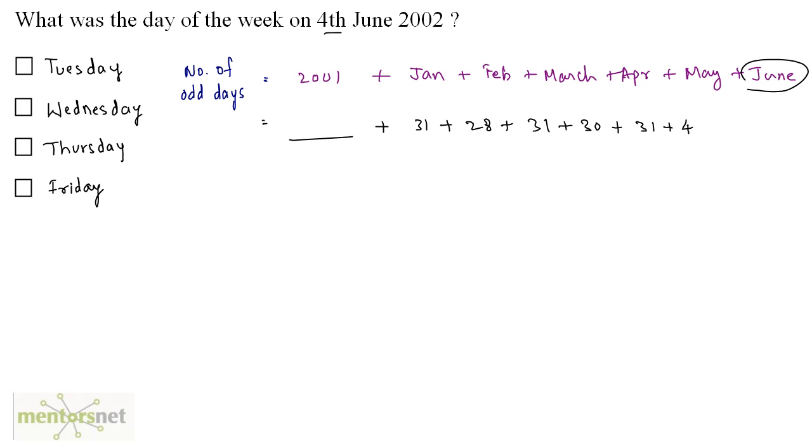Let us calculate the number of odd days till 2001. So 2001 can be written as 2000 plus one year. As 2000 is a multiple of 400, its number of odd days till that year will be 0. So 0 odd days and this is one single year, 2001, and it is an ordinary year, so the number of odd days will be 1 odd day.